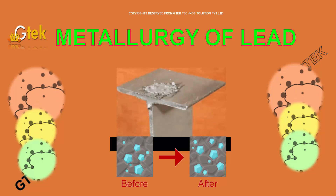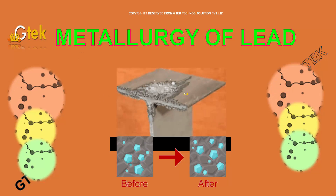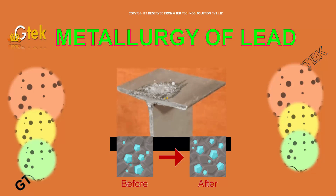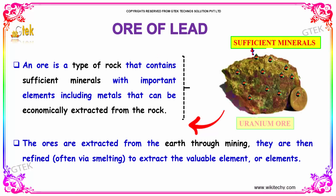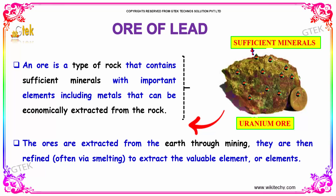Here is the metallurgy of lead. Let's see how lead is created and how it reacts with other substances — its chemical and physical properties. An ore is a type of rock that contains sufficient minerals with important elements, including metals, that can be economically extracted from the rock. The ores are extracted from the earth through mining and then refined, often via a smelting process, to extract the valuable elements.